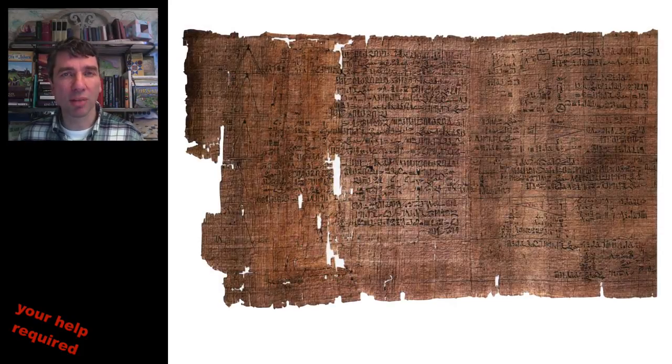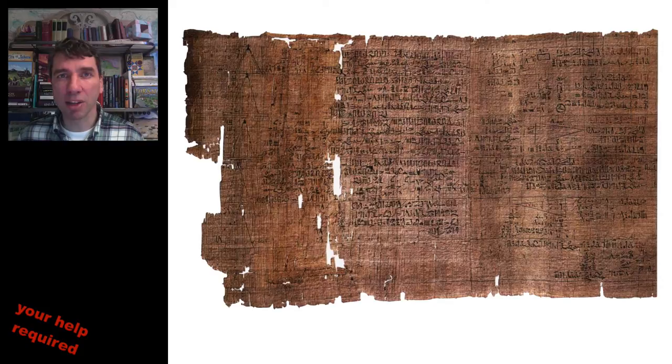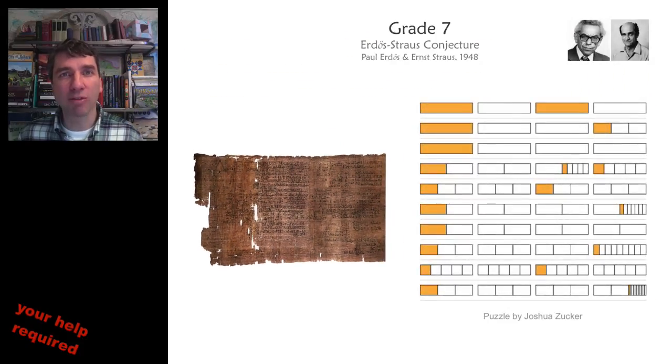The Erdos-Strauss conjecture that we are not going with was inspired by the Rind papyrus. It introduces us to Egyptian fractions. Those are fractions that have 1 in the numerator, like 1 half, 1 third, 1 quarter.